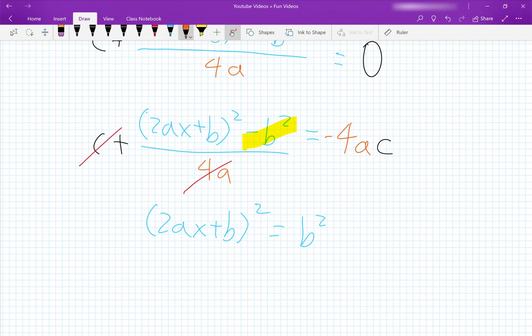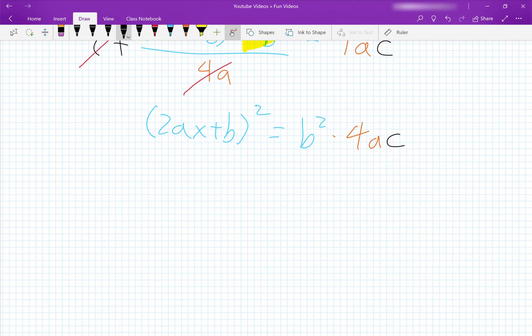Now we take the square root of both sides, and this will give us 2ax plus b equals the square root of b squared minus 4ac.